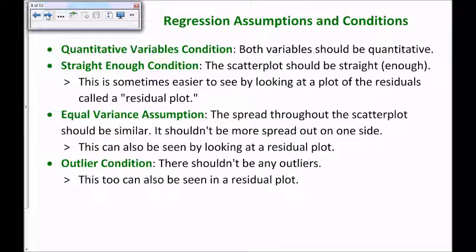Next are regression assumptions and conditions. Many of these are the same as we used for correlation. For example, the quantitative variables condition — that both variables should be quantitative. The straight enough condition — meaning the scatterplot is roughly straight; it's sometimes easier to see this by looking at a plot of the residuals called a residual plot. The equal variance assumption — a new one — in that the spread throughout the scatterplot around the line of best fit shouldn't be more spread out on either side; it should be consistent throughout the graph. And finally, the outlier condition — there shouldn't be any outliers, which you can also see in a residual plot.